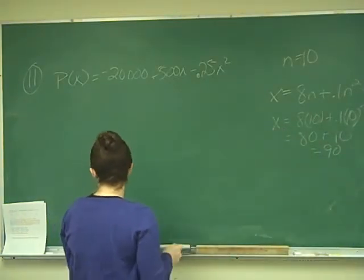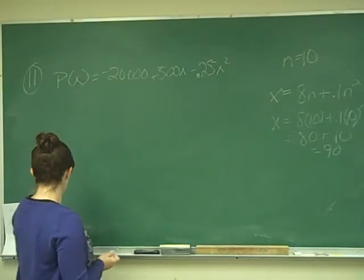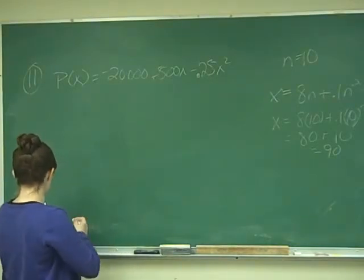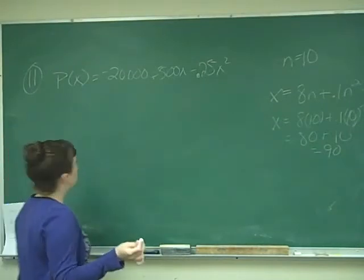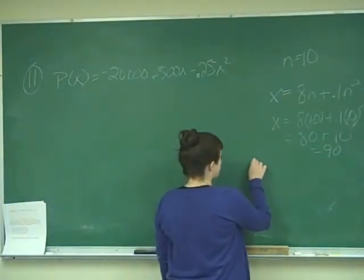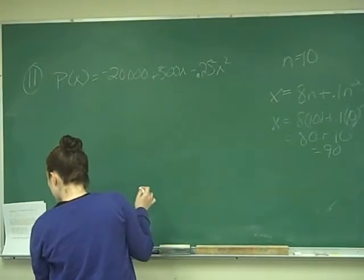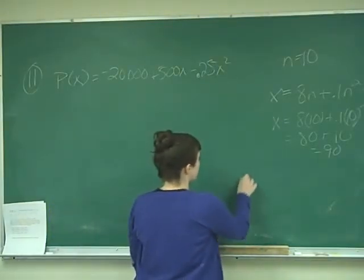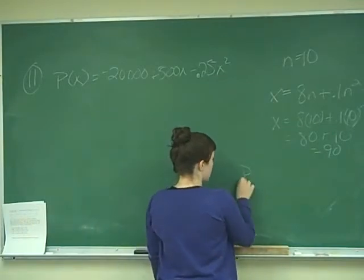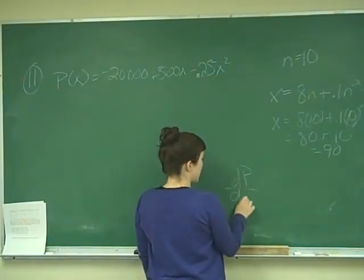We also know that we are looking for the profit in terms of n, the number of workers. So when we take the change in profit according to the change in workers, the rate at which the profit is changing with respect to n, we are really looking for dp over dn.